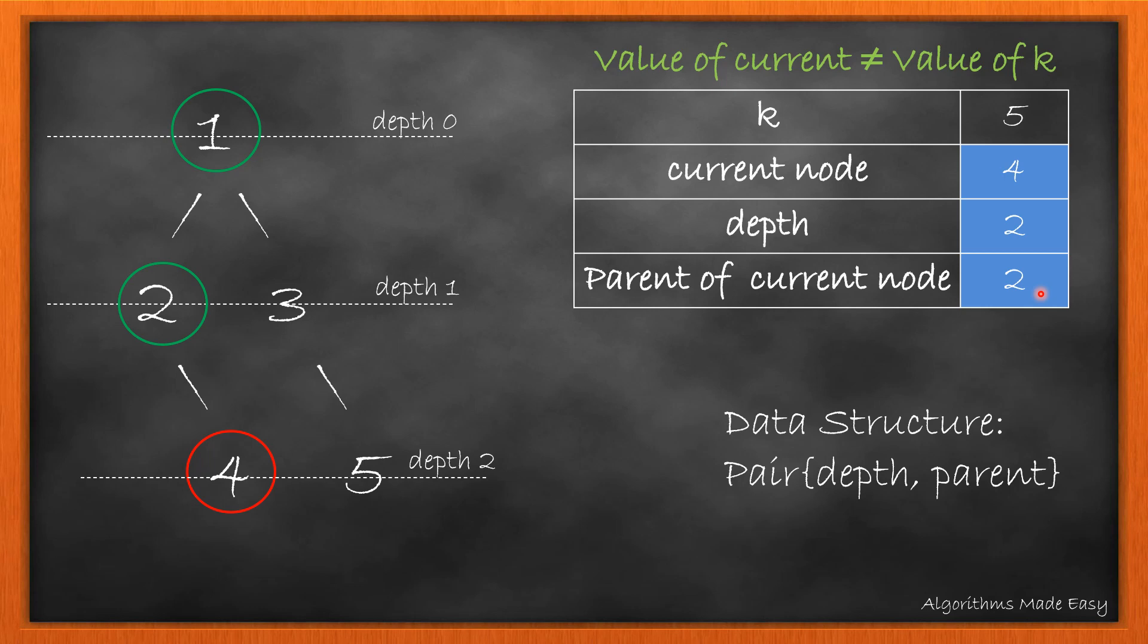As its value is not equal to k and it is a leaf node, we will move to its parent that has non-traversed child node. So in this case we move to 3.